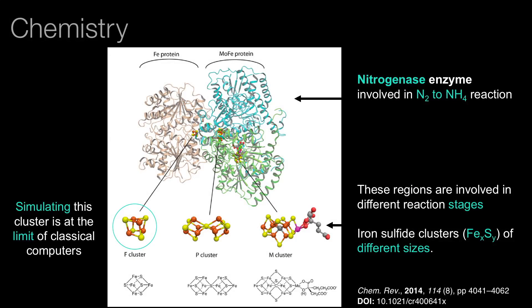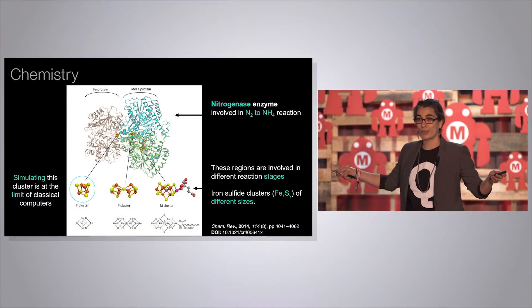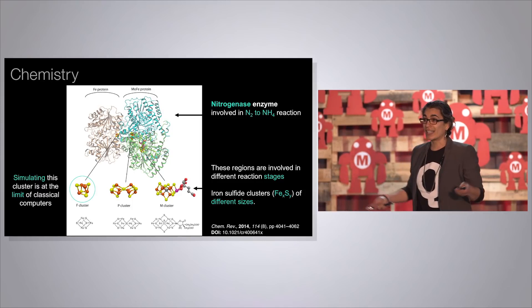The second example is chemistry. This is a picture of a nitrogenase enzyme. Anyone who's ever eaten food should care about this enzyme — it's an important catalyst for the creation of ammonia, which is an important component of food, fertilizer, pharmaceuticals, and many other things. I've called out three iron sulfide clusters in this enzyme of different sizes. The one on the left is four iron atoms and four sulfur atoms. Believe it or not, this is the biggest of those iron sulfide clusters we can simulate on the biggest supercomputer that we have.